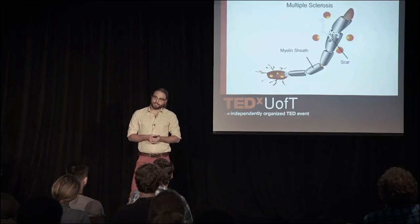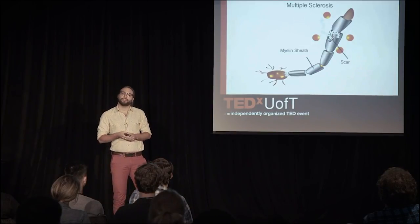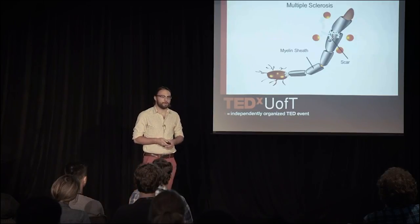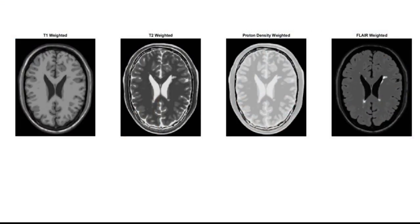The damaged and scarred tissue of the neuron is called an MS lesion. We can visualize these using magnetic resonance imaging, or MRI. In analyzing different scans, we see a very distinct pattern between the lesions and the healthy tissue. Currently, radiologists use this pattern to outline the lesions manually, calling it a segmentation.